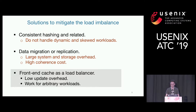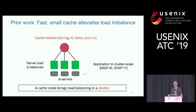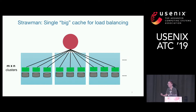Prior results back to SOCC 2011 theoretically proved that if you want to balance N servers in a cluster, you can simply put a small front-end cache in front of these N servers and always cache the hottest O(N log N) items — then the server loads will be balanced regardless of the workloads. This is a cool result, but there is a requirement that this front-end cache should be as fast as the aggregation of N servers together. Leveraging this result, existing work from NSDI '16 and SOSP '17 built load balancers in one cluster using hardware like SSDs or switches. But what if we consider a much larger scale — many clusters, for example M clusters, each with N servers?